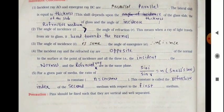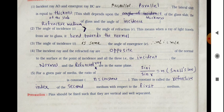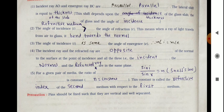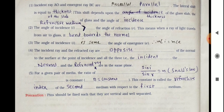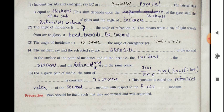Observation: The incident ray AO and the emergent ray BC are parallel. The lateral shift is equal to the thickness of the slab. This lateral shift depends upon the thickness of the glass slab, the refractive medium of glass, and the angle of incidence.